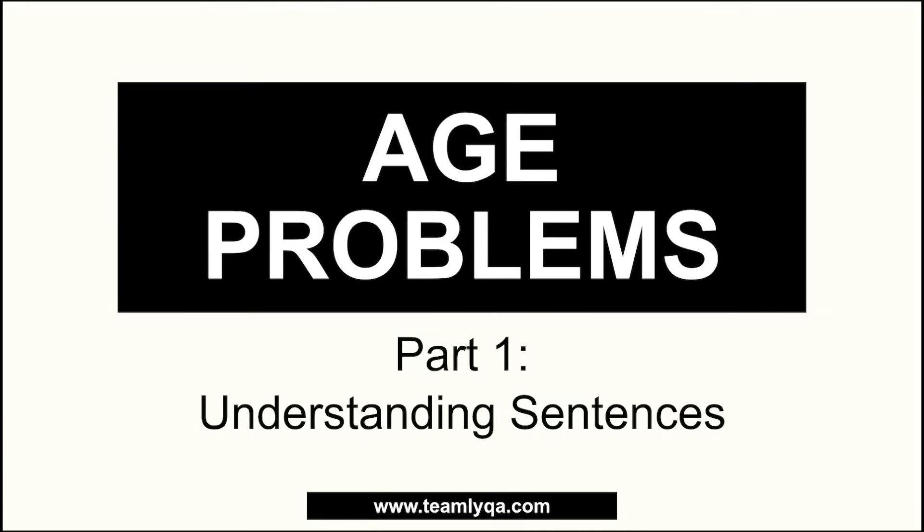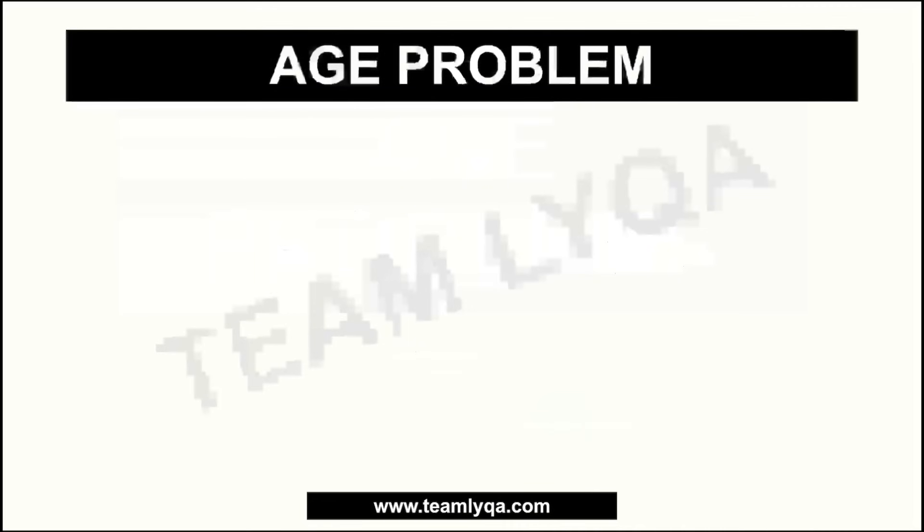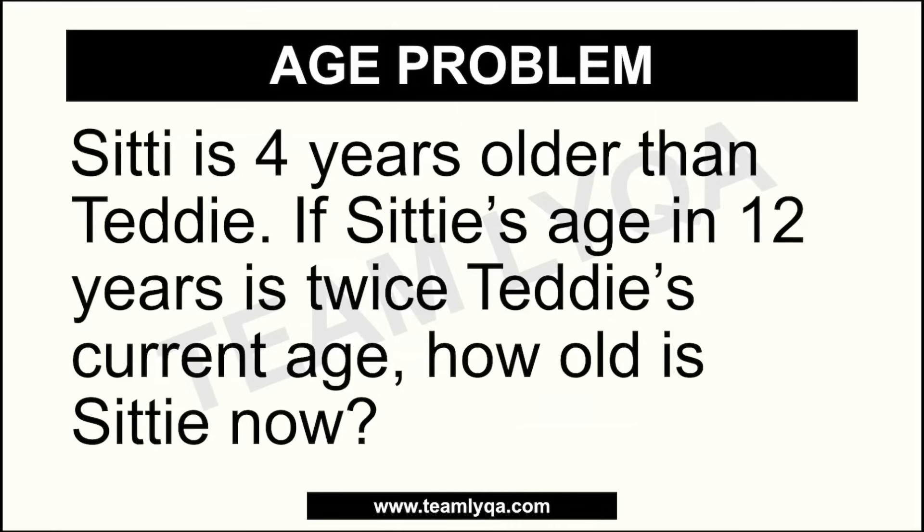Hopefully after you watch this entire series, you'll understand it much better. Now, the first problem we encounter with a problem like this is how complicated it sounds. For example: 'CT is four years older than Teddy. If CT's age in 12 years is twice Teddy's current age, how old is CT now?' There are too many factors coming into play, and we can't immediately understand them all because so much is happening. So we need to break it down and go through them one by one.